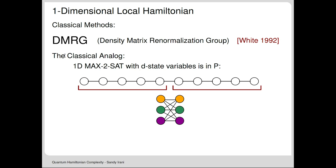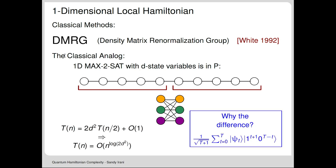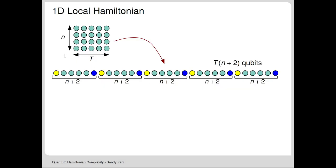Why the difference? Quantum superposition gives us an extra dimension. Even though I have a 1D system in quantum, I'm actually encoding something like a matrix through quantum superposition of different states, whereas you don't have that in the classical world. The sketch of the proof takes an n-by-T grid and lays it out on a line. The computation proceeds left to right, with a cursor indicating where the clock advances.